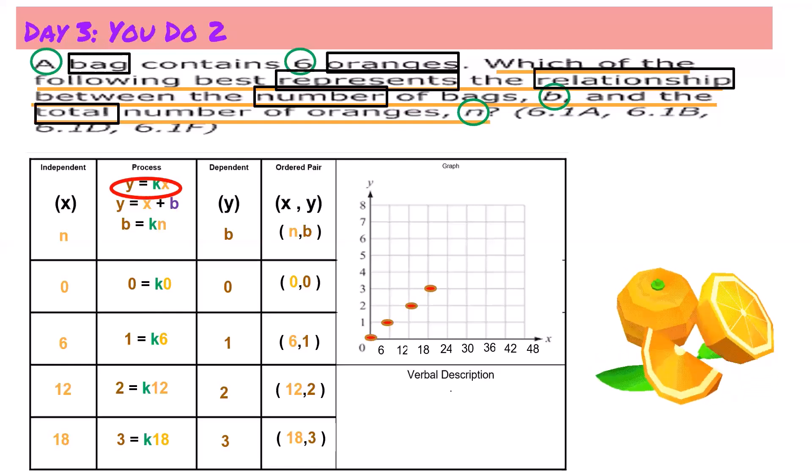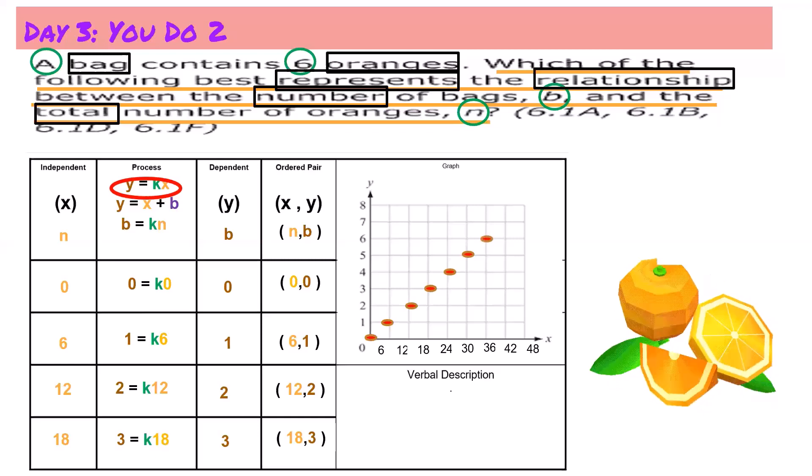Now let's finish up the graph. The next coordinate that I would plot would be 24 and 4. I would go over 24 spaces and up 4. Next I would go over 30 and I would go up 5. I would go over 36 and I would go up to number 6. And finally I would go over 42 and up to 7.